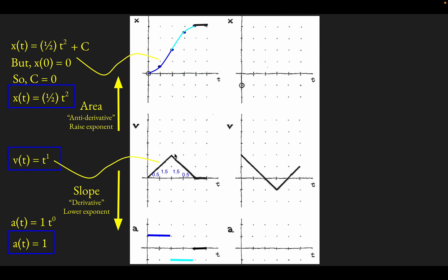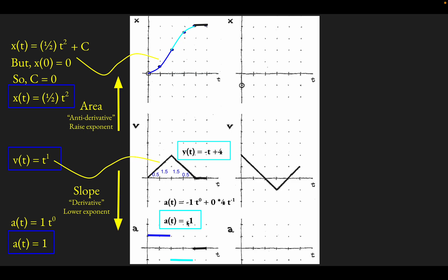Let's try this for the next two seconds of motion — this downward sloping part of the velocity graph. This function is described by minus t plus four. It's like y equals mx plus b: minus one t is the slope, and plus four is the y-intercept. So the velocity function is minus t plus four. If we do the power-lowering trick to take the slope: minus t to the first brings the one down in front, giving minus one t to the zero for the first term. The second term, four t to the zeroth, goes to zero. So the acceleration as a function of time for this interval is negative one.